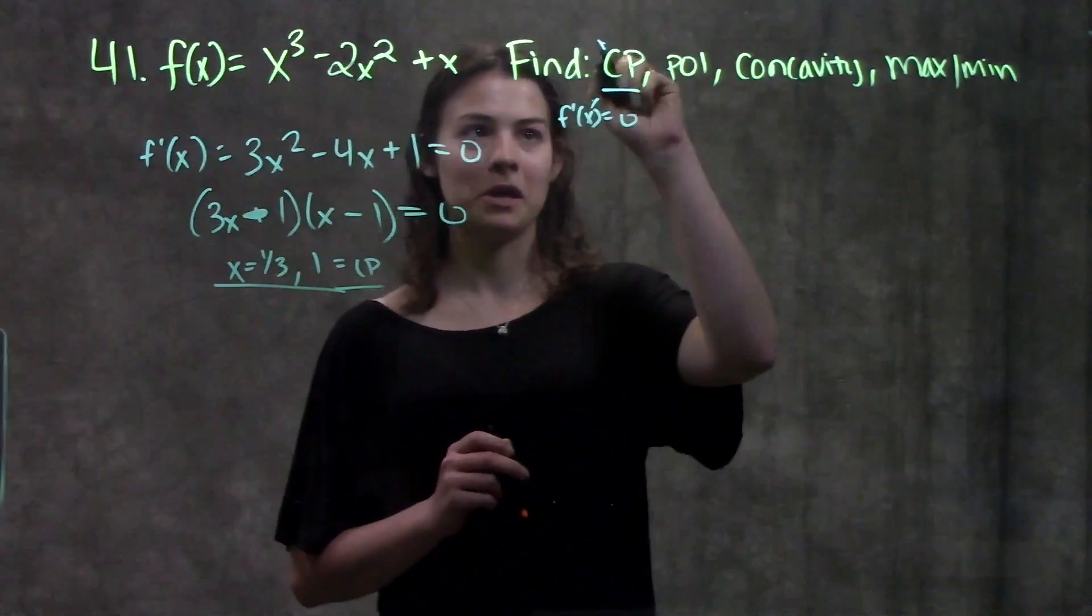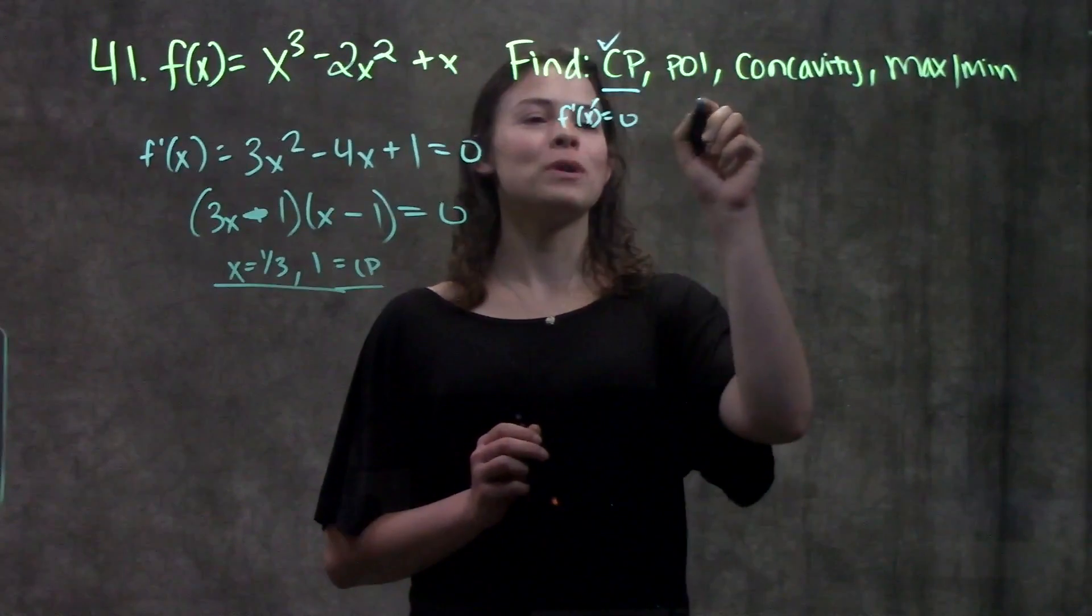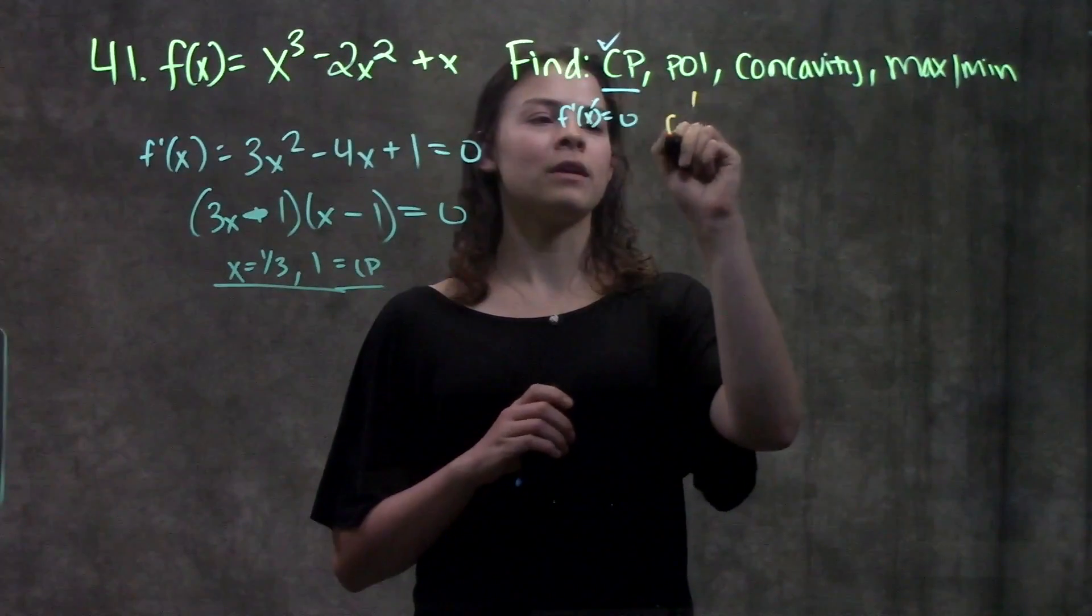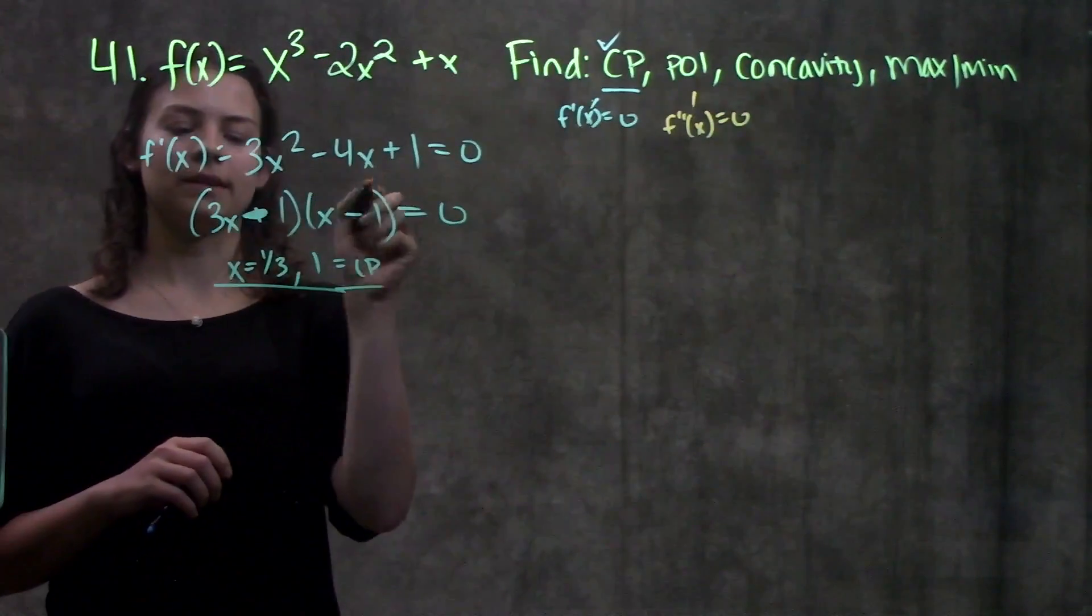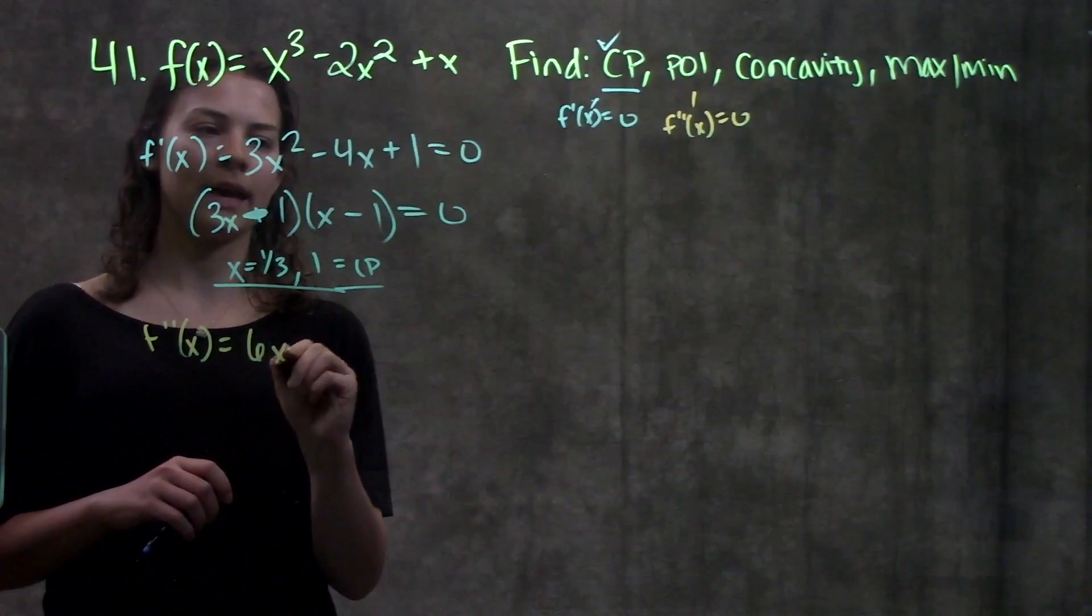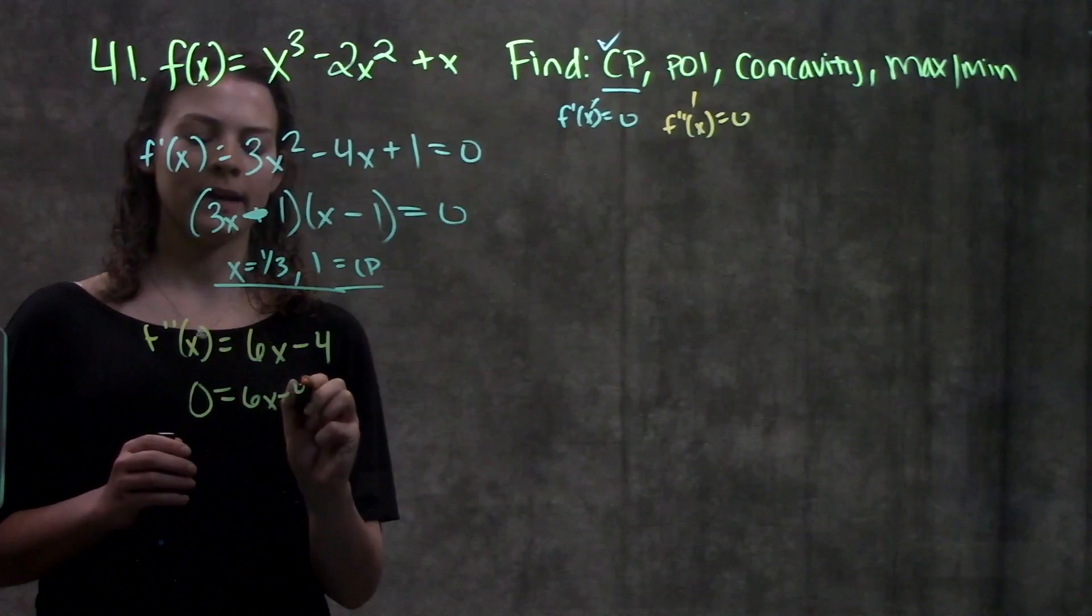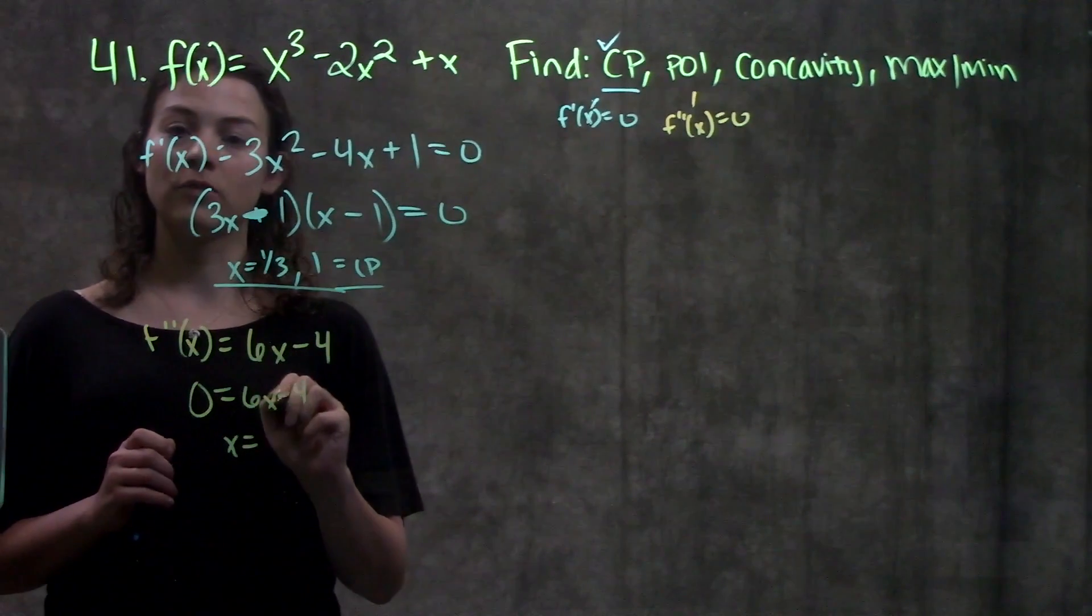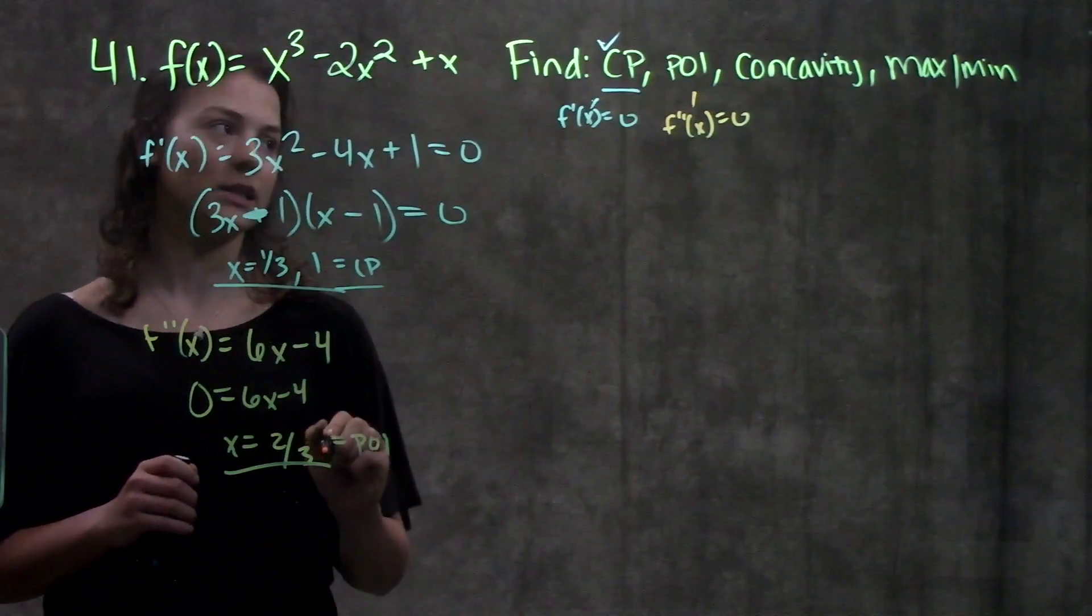Alright, first one, check. Step two, find our points of inflection. Remember, points of inflection, that's wherever the second derivative equals zero. So now we'll just take the second derivative and we get that f double prime of x is equal to 6x minus 4. Setting this equal to zero and solving for x, we get that x is equal to 4 over 6 or 2 thirds. And this is my point of inflection.